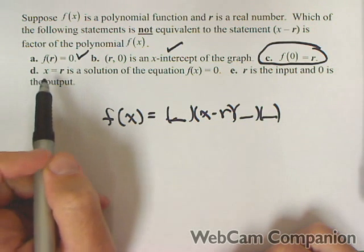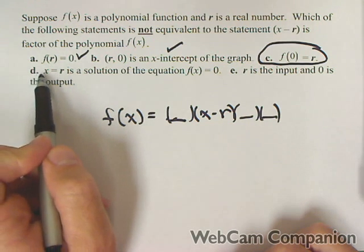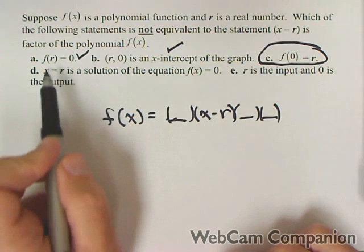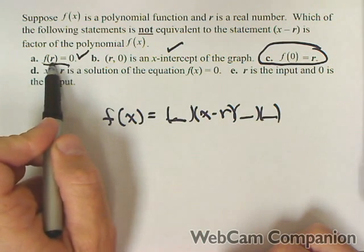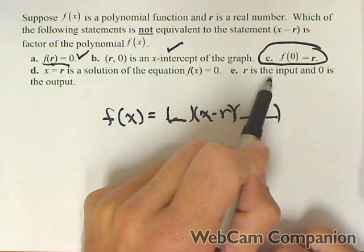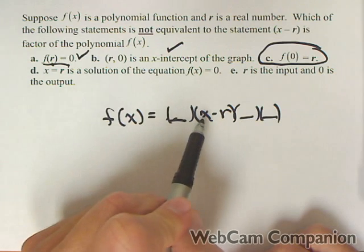Let's go ahead and talk about the last two so we make sure we're clear. x equals r is a solution of the equation f of x equals zero. Yeah, we saw that in A because we use r as an input. It makes the whole thing zero.